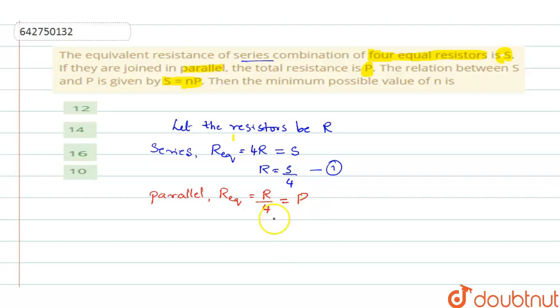So from this also, we shall write the value of R. R will be equal to 4P. Call it as equation 2.